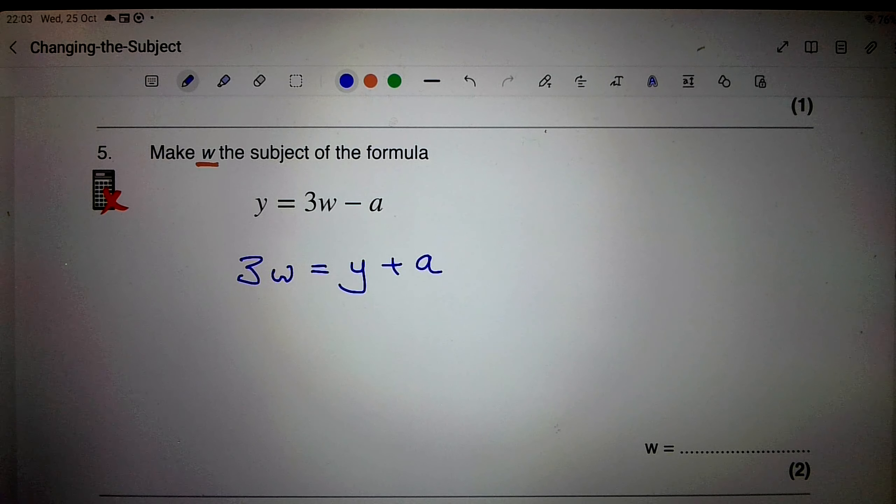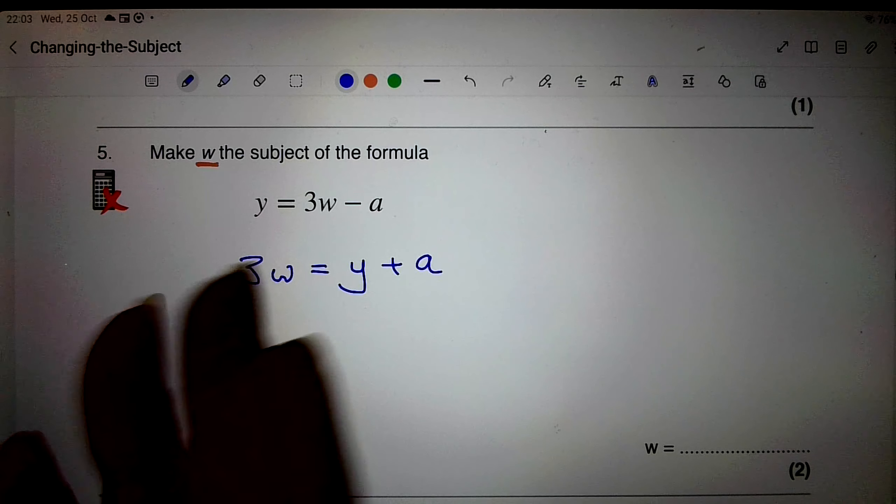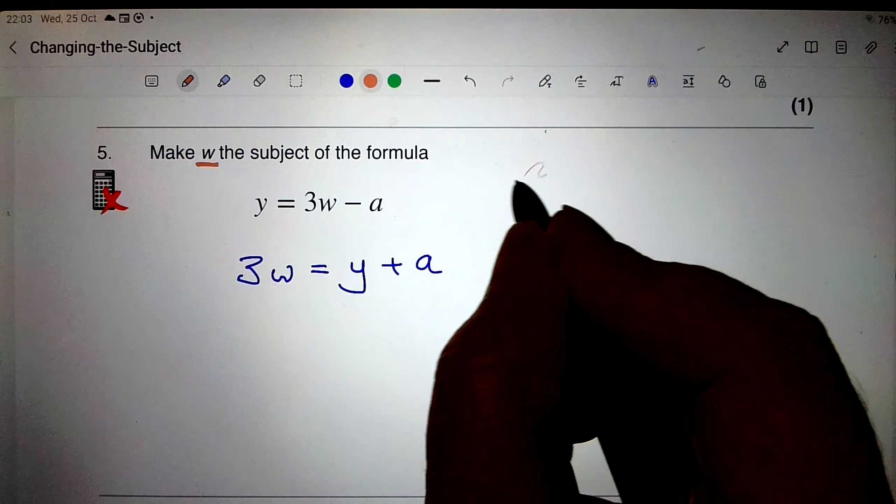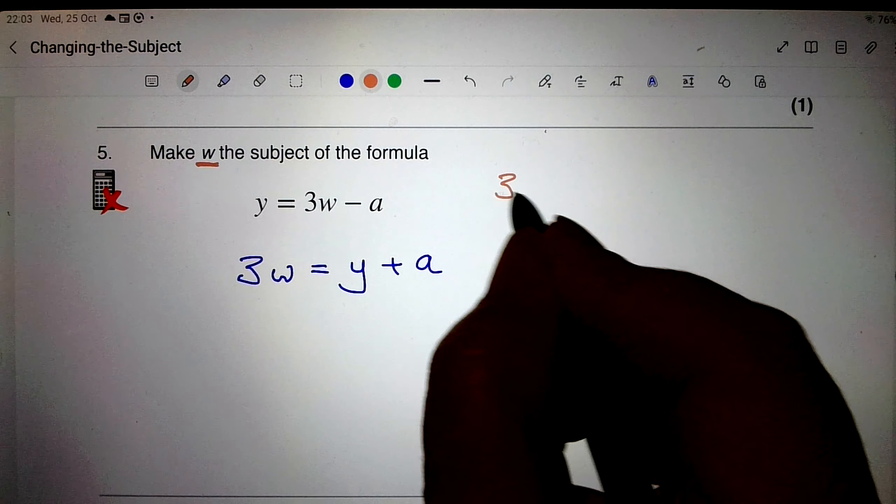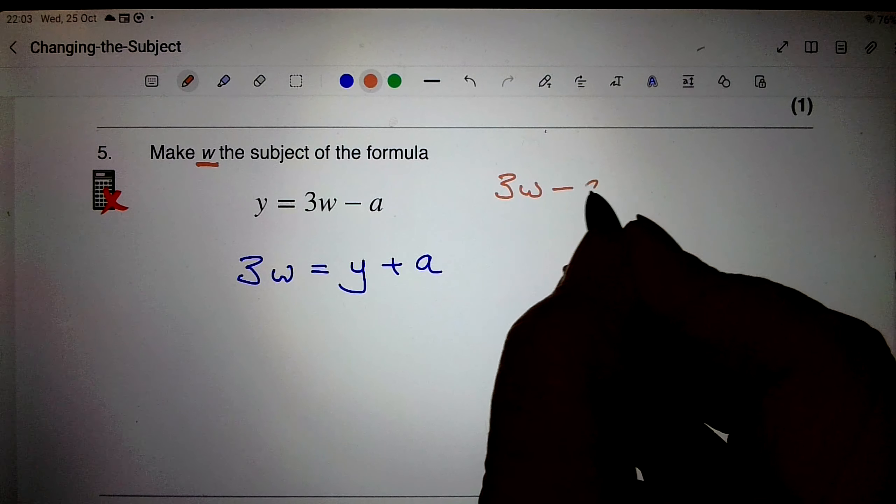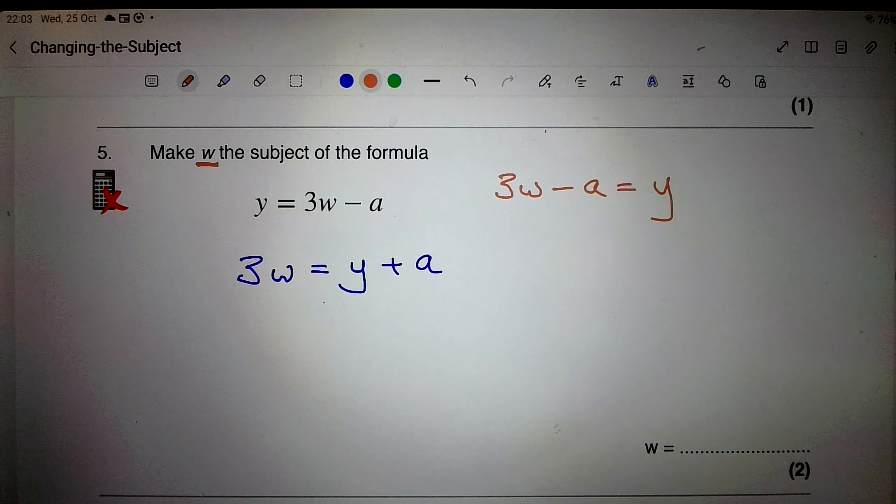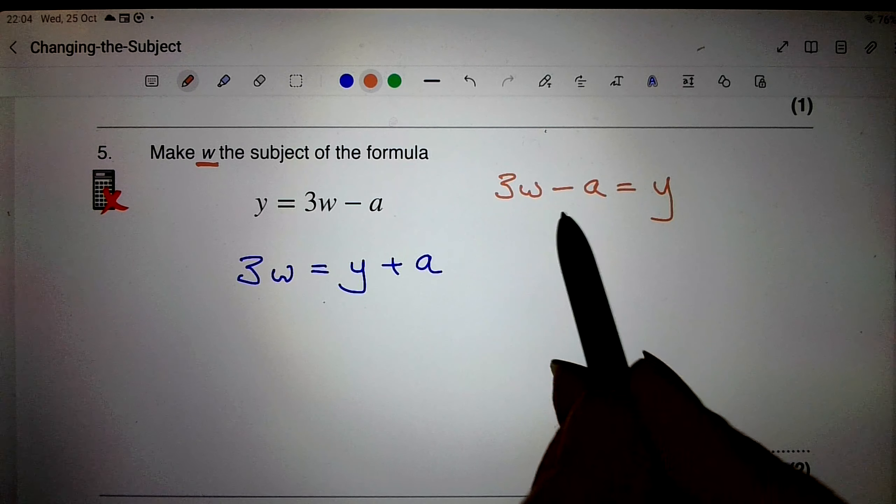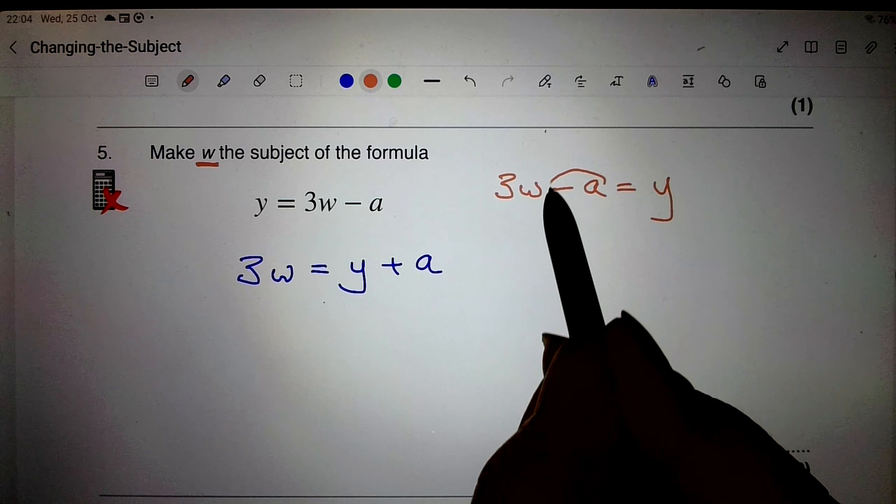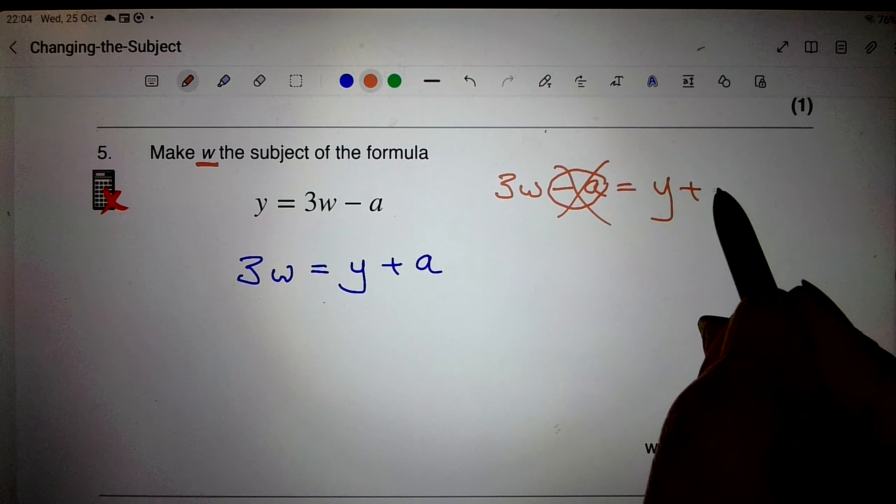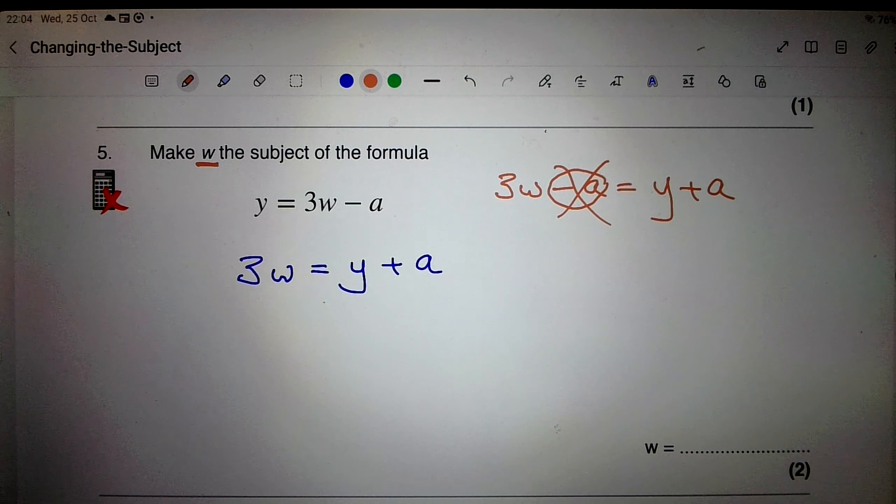So my next line is going to be 3w equals y plus a. I hope you see how I did that. I kind of took that, and in my head I made it 3w minus a equals y. And then I took that, got rid of it, I made it plus a on that side. And I did all that lot in my head.